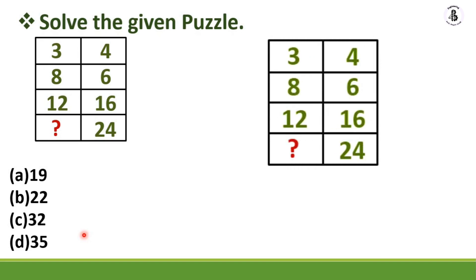Just write this problem like that: 3, 4, 8, 6, 12, 16, and your missing number with 24. If you observe, if 3 multiply by 2, it becomes 6. And here 4 multiply by 2, it will be 16.